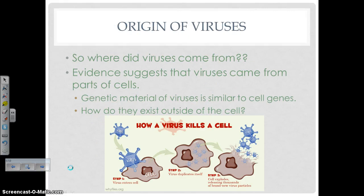So where exactly did these viruses come from? The two main parts of a virus are the outer protein coat and the inner genetic material — and those are things we find inside of a cell. There's a lot of evidence that suggests viruses came from these original parts of cells. The genetic material found in viruses is very similar to that found in the genes of living organisms. But the question we still don't know the answer to is: how did they find a way to exist outside of the cell?